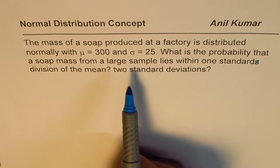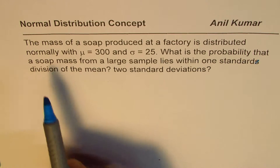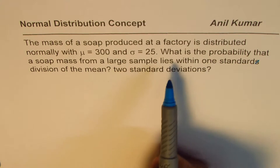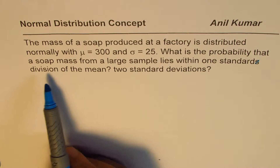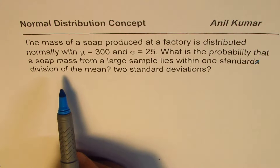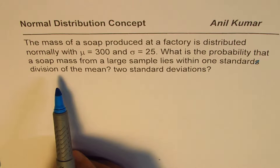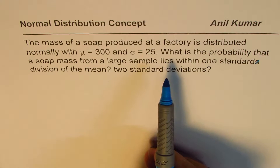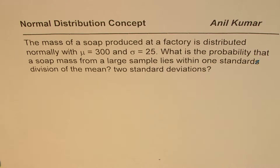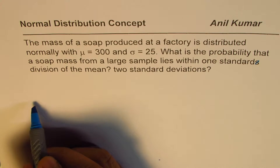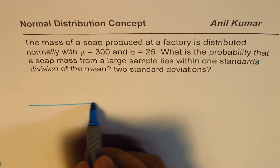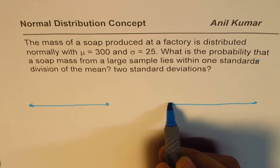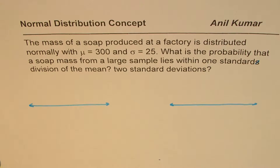When we say we need to find the probability that mass from a large sample lies within one standard deviation, that means it's a random sample. One standard deviation translates to a Z-score of 1, so plus or minus 1. This will be lengthier than it needs to be — the idea is to understand the concepts as we move further with normal distribution.